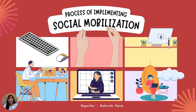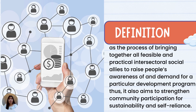Good day everyone, I'm Debbie. We are still in Module 6. In the previous topic, we talked about social mobilization continuum, and we defined it as the process of bringing together all feasible and practical intersectoral social allies to raise people's awareness of and demand for a particular development program. It also aims to strengthen community participation for sustainability and self-reliance.